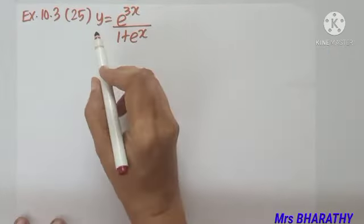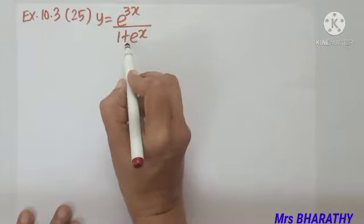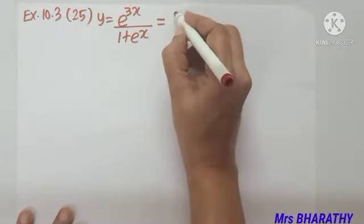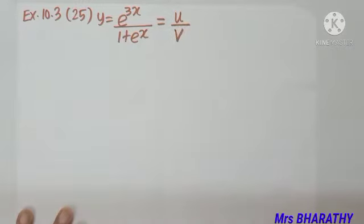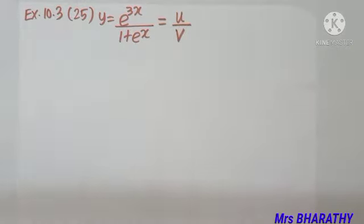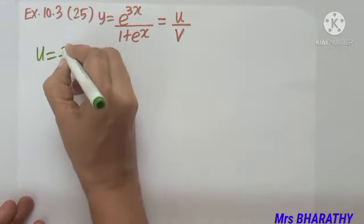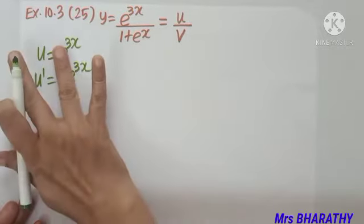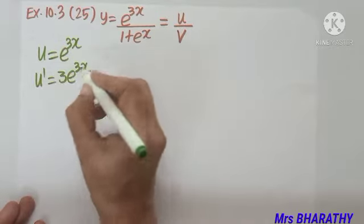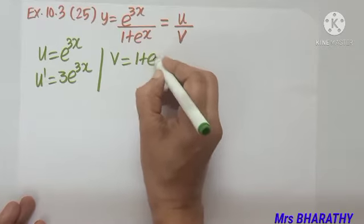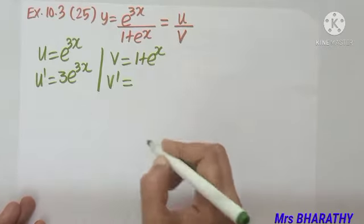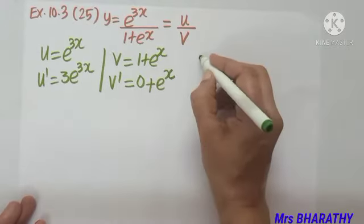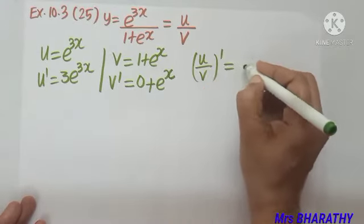Question number 25: y = e^(3x) / (1 + eˣ). We need to differentiate. It is of the quotient rule pattern, so the numerator we call u and the denominator we call v. u = e^(3x), so u' = e^(3x) × 3. v = 1 + eˣ, so v' = 0 + eˣ = eˣ.